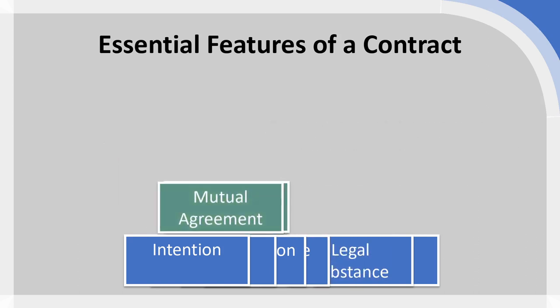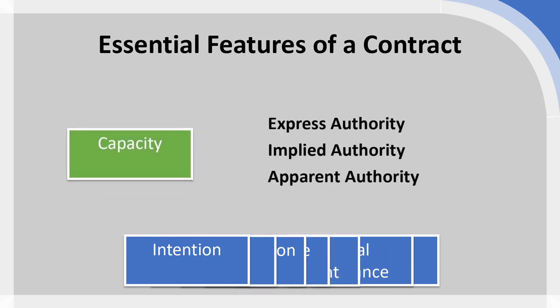The next essential feature is capacity — whether the parties actually have capacity to enter into the agreement. Part of this is legal capacity: is the person of sound mind and of legal age? In the UK, age and being of sound mind are the key qualifiers of capacity. But for business contracts, we also have the question of having the authority to enter into the agreement on behalf of an organisation.